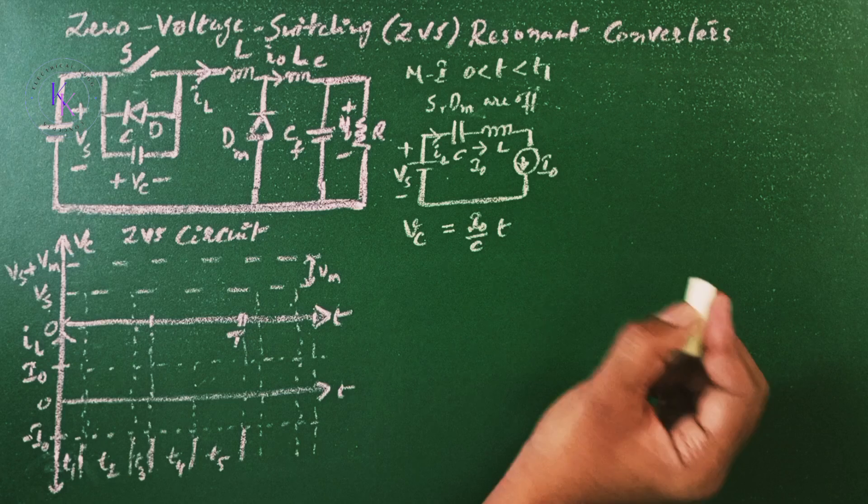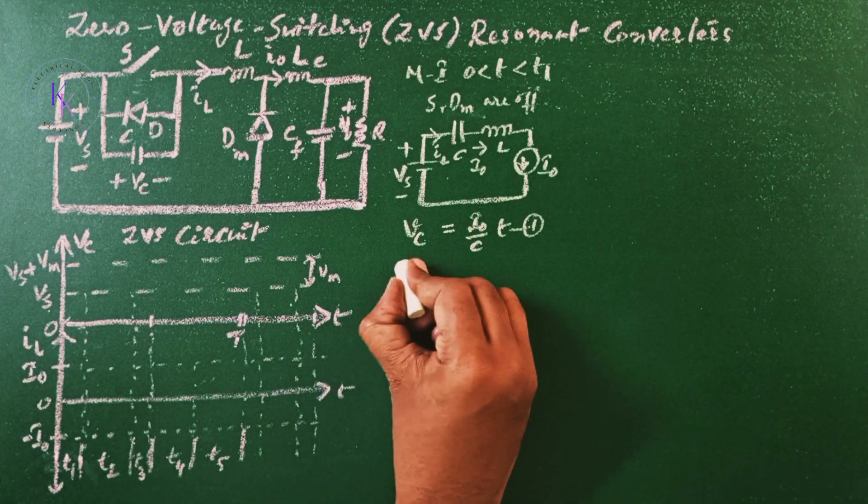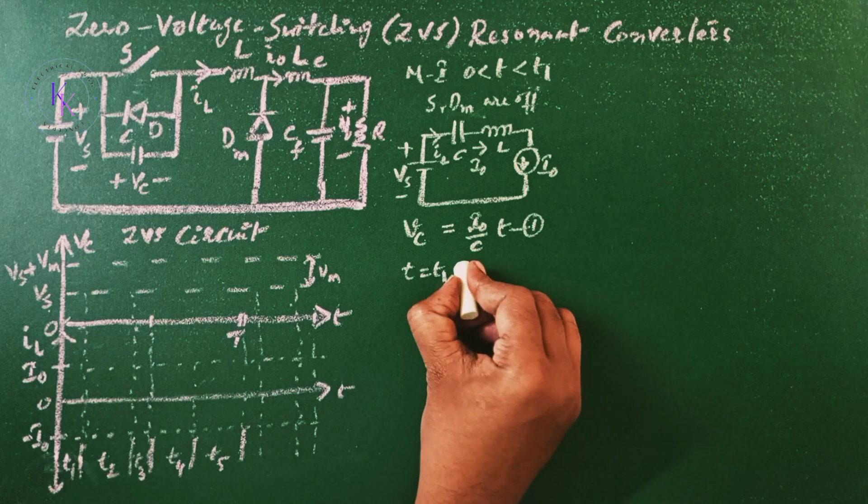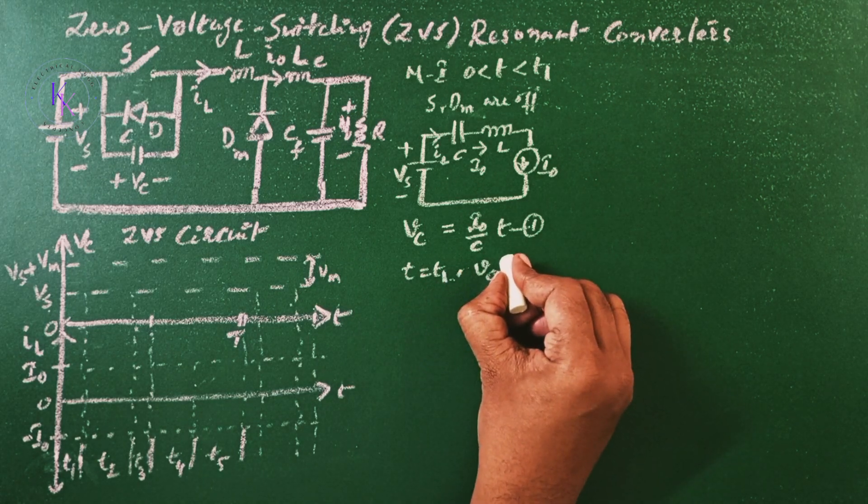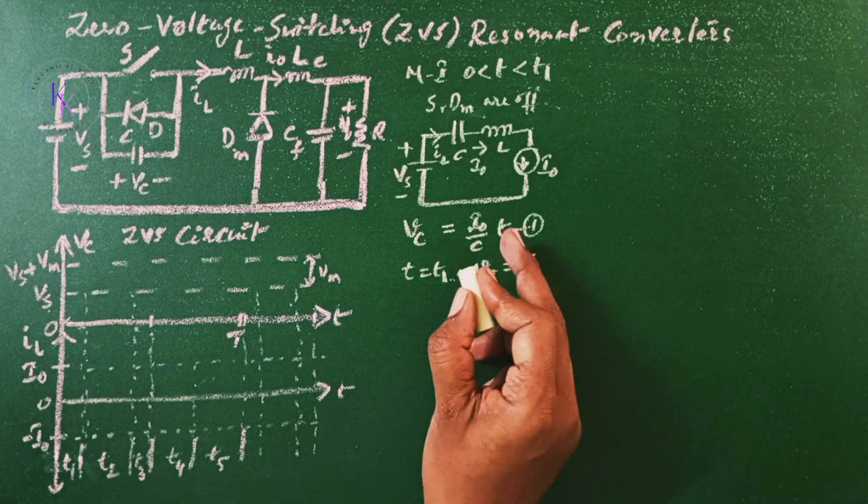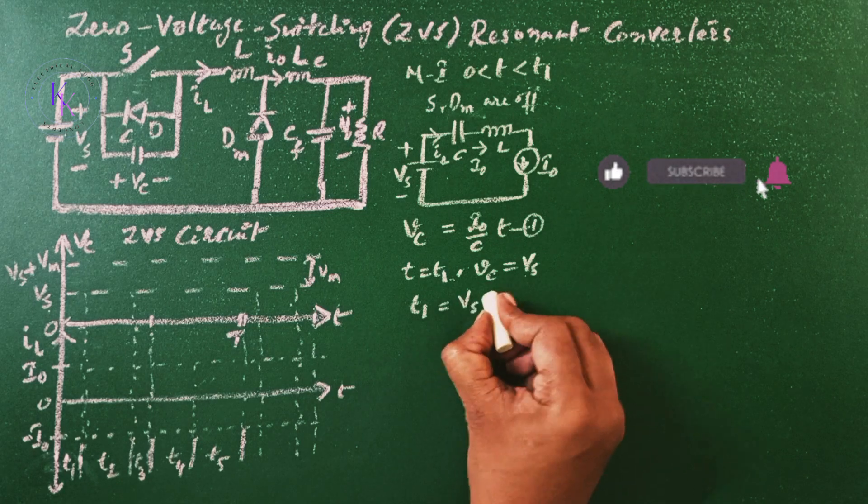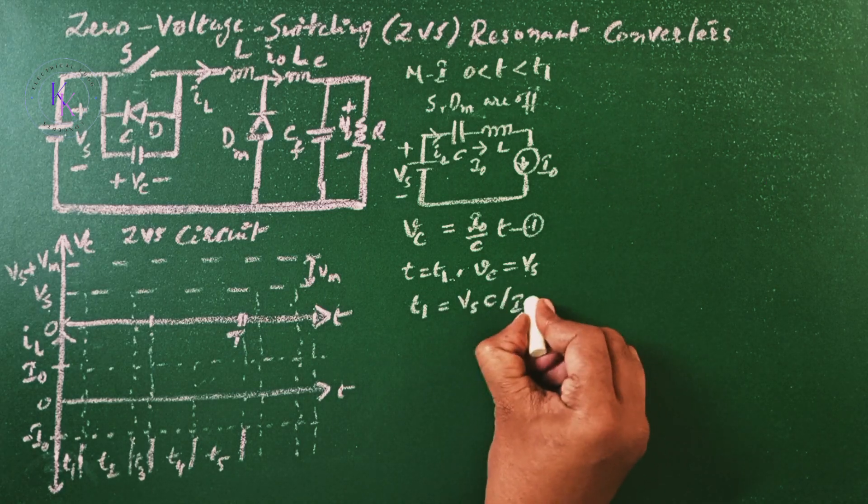And this mode is going to end at T equals to T1 where the voltage VC is going to reach up to VS at T equals to T1. Then the time T1 is given by the voltage VS C divided by I0.